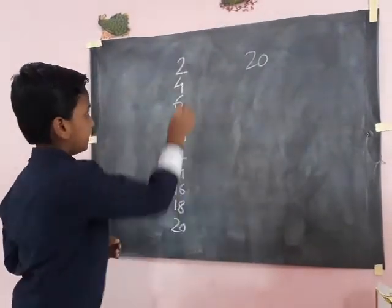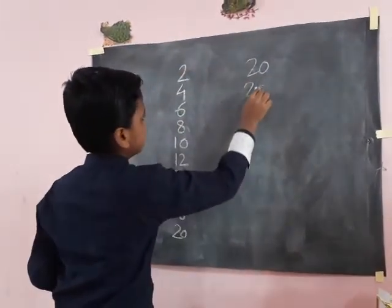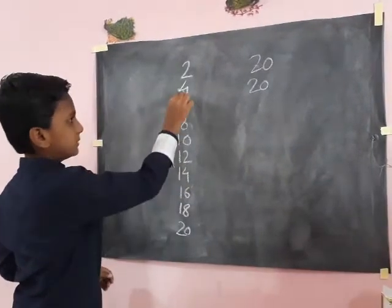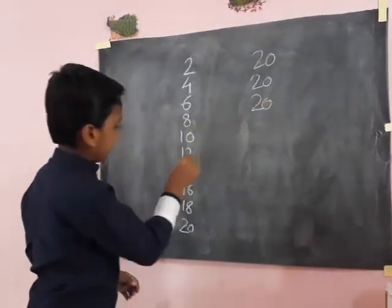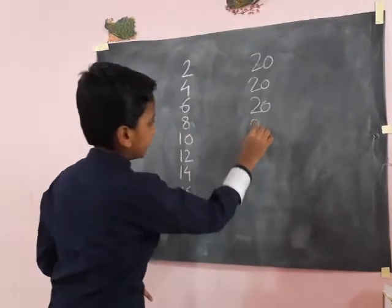Then 18 plus 2, 20 right here. Then 16 plus 4, 20 right here. Then 14 plus 6, 20 right here.